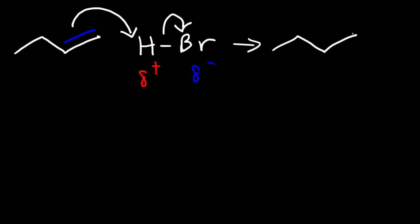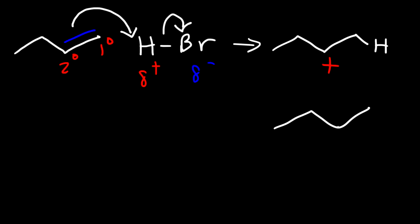Now where should we put the hydrogen atom? Should we put it on the primary carbon of the double bond, or on the secondary carbon? If we put it on the primary carbon, we're going to have a plus charge on the secondary carbon. And if we put the hydrogen on the secondary carbon, we're going to get a positive charge on the primary carbon.